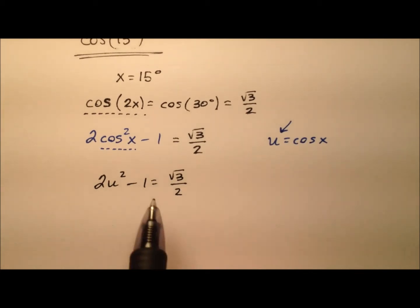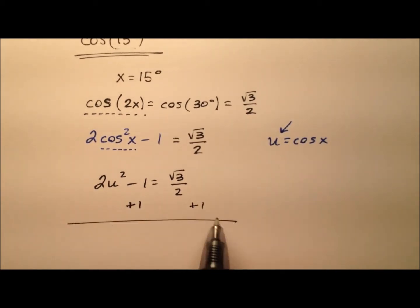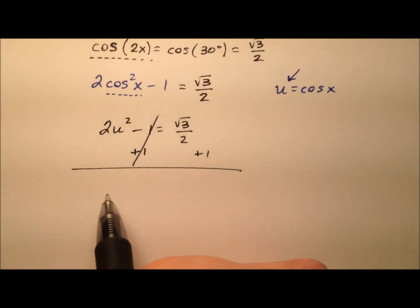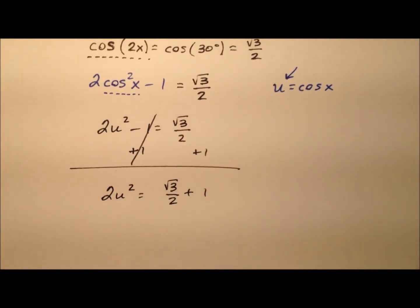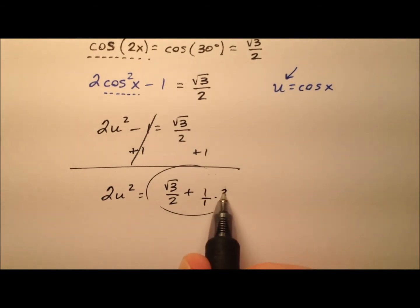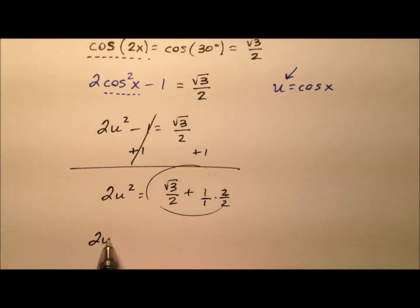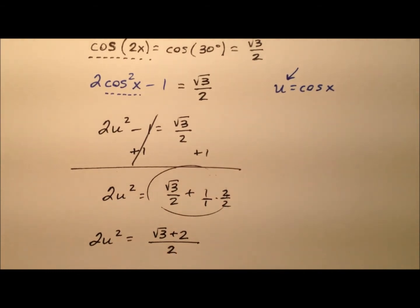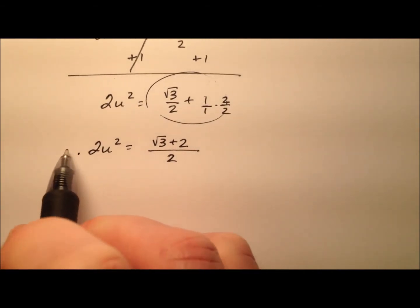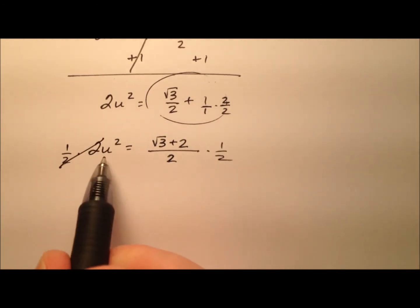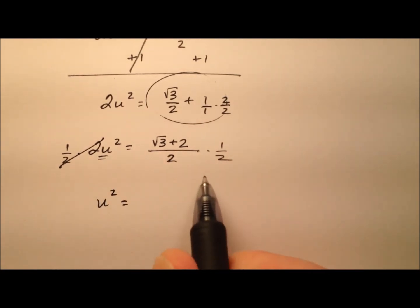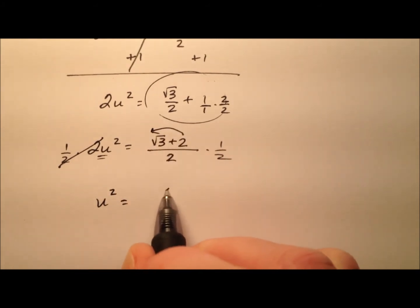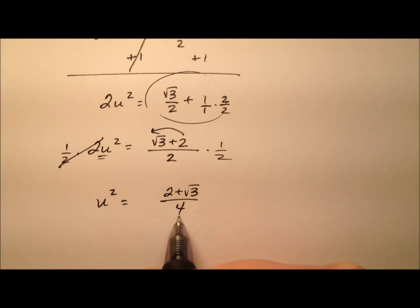Let's solve for u. We're going to start by adding one to both sides, so those ones will cancel, giving us 2u squared equals the square root of three over two plus one. Let's get common denominators — I'm going to multiply by two over two — ultimately giving me 2u squared equals the square root of three plus two, all over the common denominator of two. Then let's multiply both sides by one half to get u squared by itself: u squared equals two plus the square root of three, all over four.